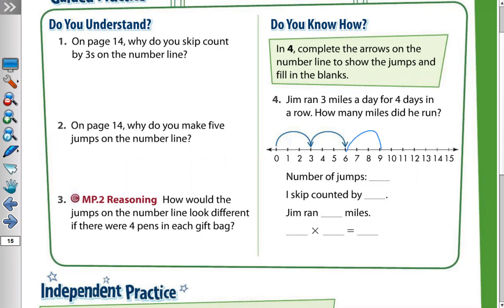From zero: 0 + 3 = 3, + 3 = 6, + 3 = 9, + 3 = 12. How many jumps? One, two, three, four jumps, with three in each. So Jim ran 12 miles in four days. I skip counted by three: 3, 6, 9, 12. This means four times three equals 12.